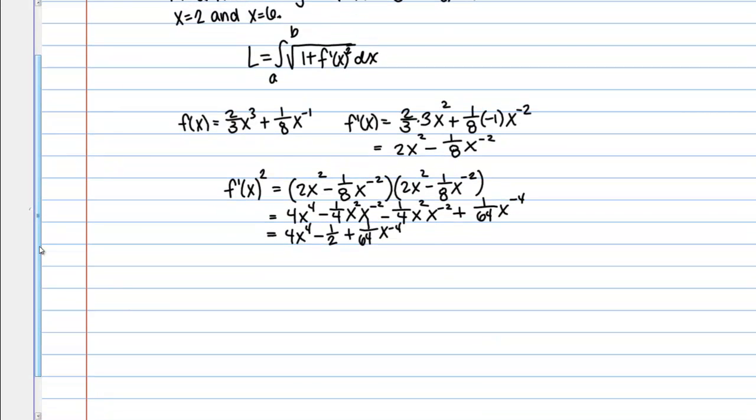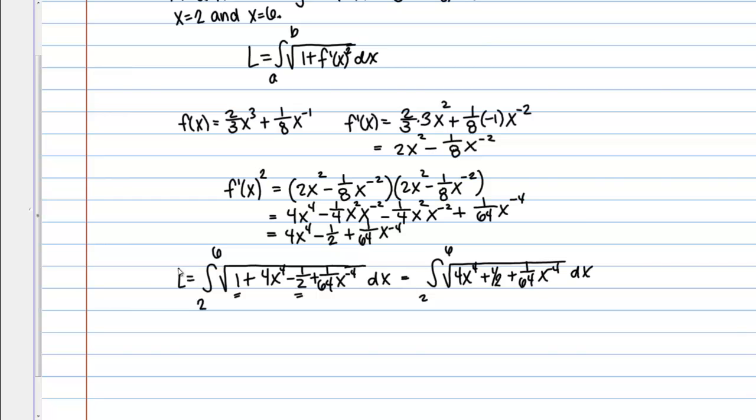Now that we have that, let's go back and set up our integral. Our bounds are from X equals 2 to X equals 6 and then under the root I have 1 plus this expression I just found: 1 plus 4X to the fourth minus 1/2 plus 1 over 64 X to the negative 4. So if I combine those, this becomes 4X to the fourth plus 1/2 plus 1/64 X to the negative 4 DX.